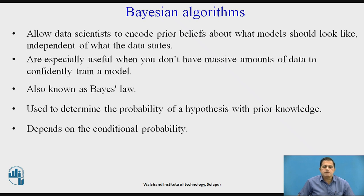What does Bayes' law indicate? It indicates the probability of a hypothesis with prior knowledge, and some elements are dependent on conditional probability. We are going to see these concepts now with the help of an example.